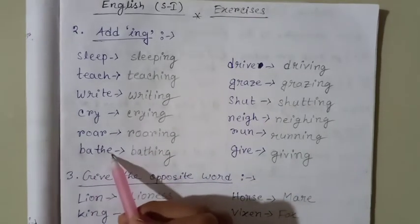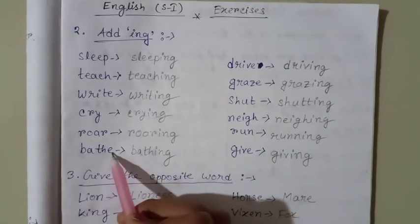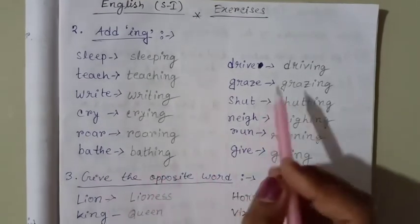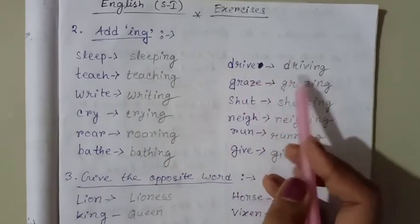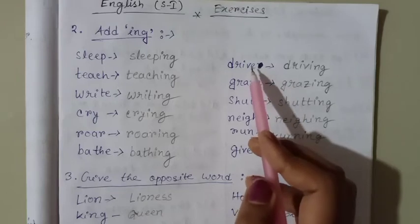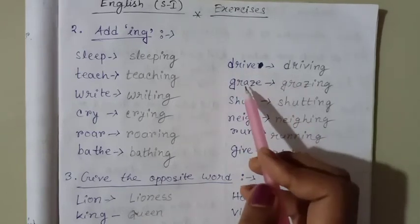Look, E is at the end of this word. So we have to omit this E when we are adding ing. Bath, bathing. Drive, driving. There is also E at the end of this word. So we have to omit the E. Drive, driving. Graze, grazing.